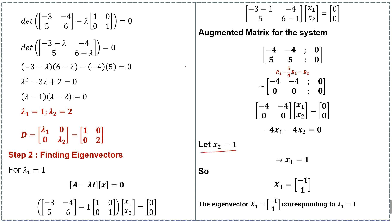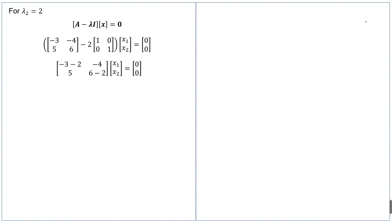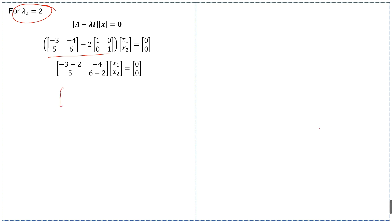Setting x₂ = 1 implies x₁ = −1. So the eigenvector corresponding to λ₁ = 1 is X₁ = [−1; 1]. Now we find the eigenvector corresponding to λ₂ = 2. Using the same steps with λ₂ = 2, after simplification the matrix becomes [−5, −4; 5, 4] times [x₁; x₂] = [0; 0]. We write the augmented matrix for this system.